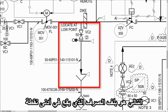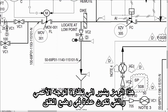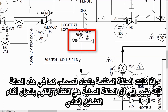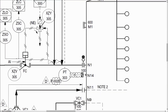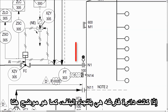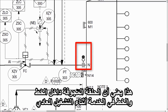Next is the drain valve that is located at the lowest point. This is the spectacle blind with normally closed configuration. If the dark ring is toward the valve, as in this case, it indicates that the solid ring covers and isolates the joint during normal operation. If only the circle is toward the valve as shown here, that means the hollow ring is there and the line is live during normal operation.